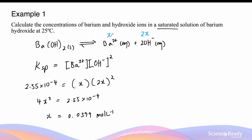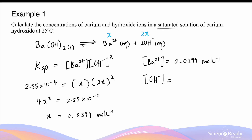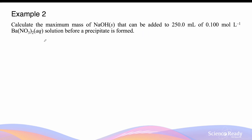Since x was defined as the barium concentration, [Ba²⁺] = 0.0399 mol/L. The hydroxide concentration is 2x, so [OH⁻] = 0.0399 × 2 = 0.0799 mol/L. For both values we consider significant figures — the only number used in the calculation is the Ksp value, given as three significant figures (2.55), so both concentrations are reported to three significant figures.